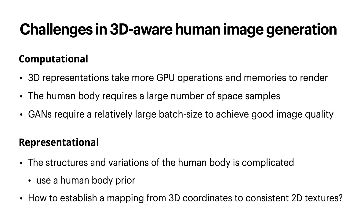Generating realistic 3D human body images is a challenging task that involves both computational and representational difficulties. On the computational side, 3D representations take more GPU operations and memory to render than 2D ones, and the human body requires a large number of space samples to capture its fine details. Moreover, GANs require a relatively large batch size to achieve good image quality, which further increases the computational cost.